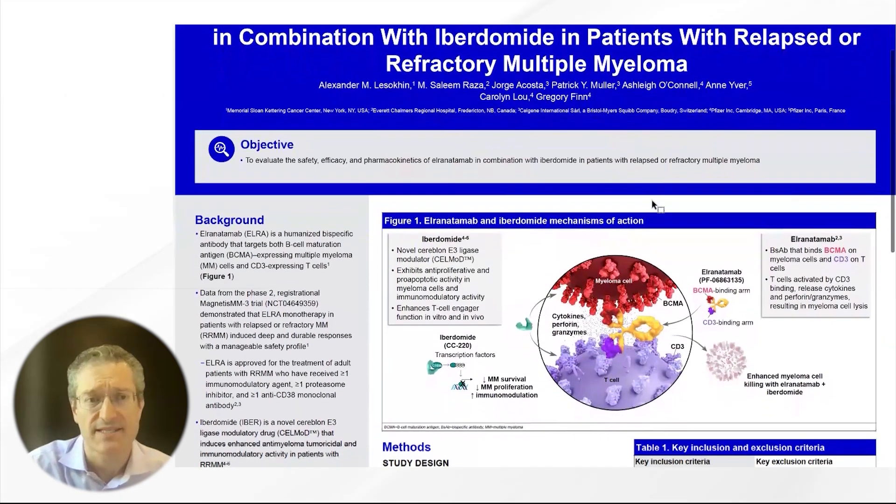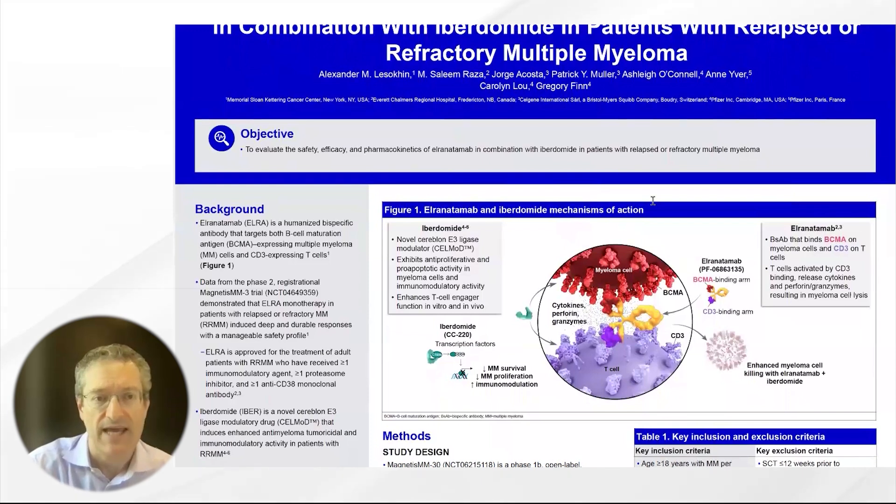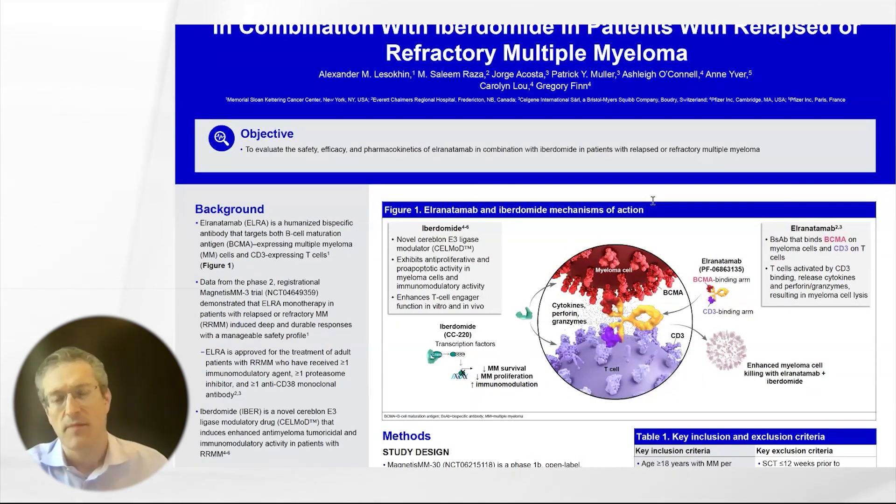Elranatamab is a humanized bispecific antibody that targets B-cell maturation antigen on myeloma cells and CD3 on T cells. Data from the phase 2 MagnetisMM-3 trial demonstrated that elranatamab monotherapy in patients with relapsed or refractory myeloma led to deep and durable responses with a manageable safety profile. Elranatamab has been approved for patients previously exposed to a PI, IMiD, and anti-CD38 monoclonal antibody as of August 2023.